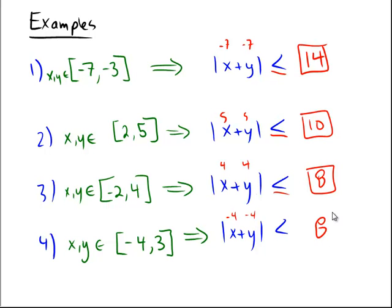So in each case, we ended up taking the absolute value, the biggest absolute value of the two endpoints of the interval, and then doubling it, and that gave us a bound on the absolute value of x plus y.